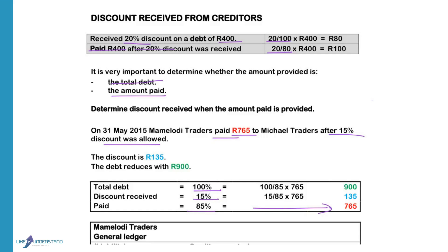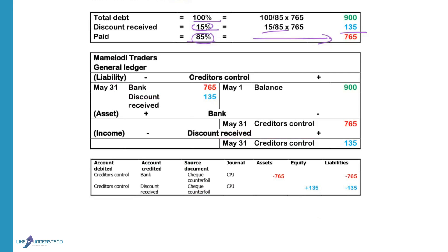The discount received is 15 divided by 85 — the percentage we want divided by the percentage we know — times 765 Rand. The total debt is 900 Rand. The creditors will be decreased with the amount paid and the discount received so that the debt is cancelled and you don't owe any money.